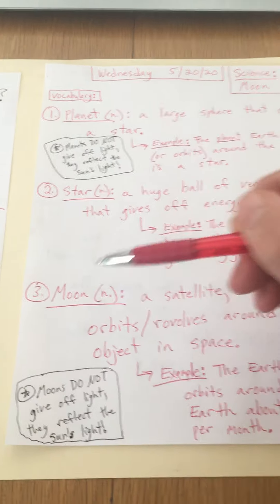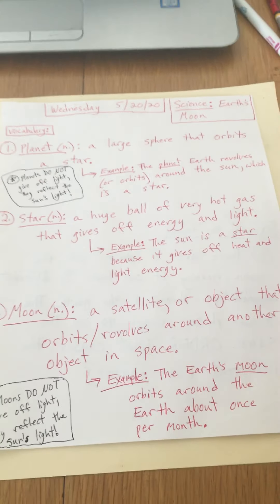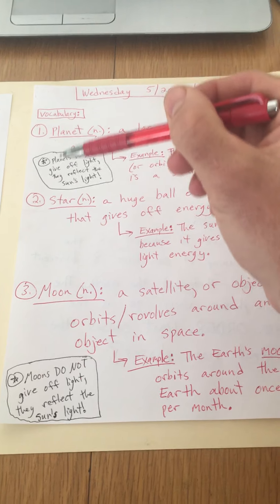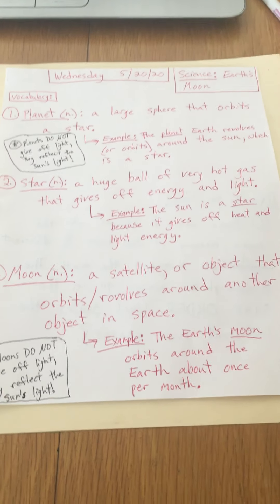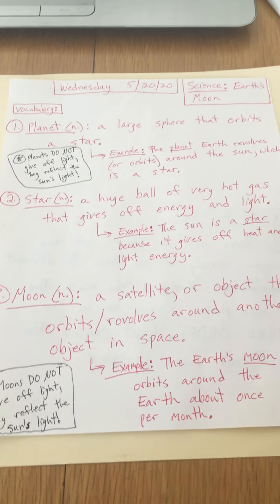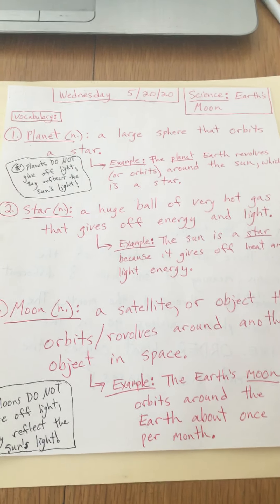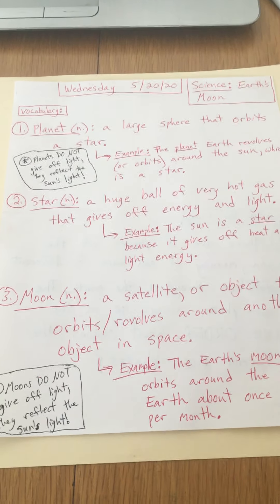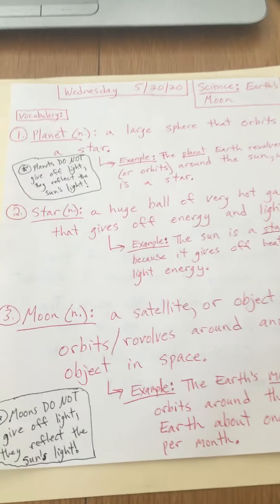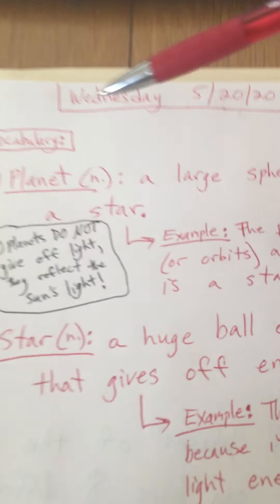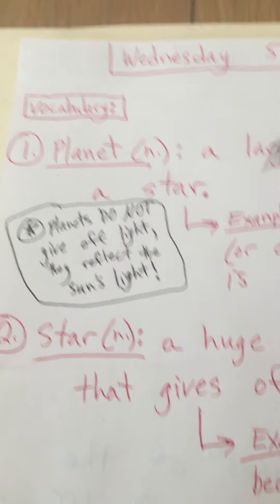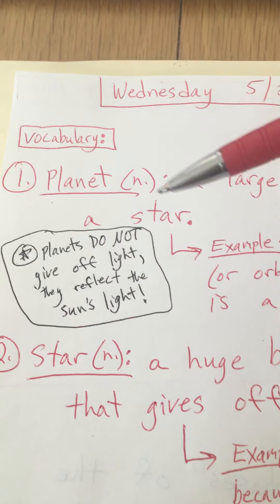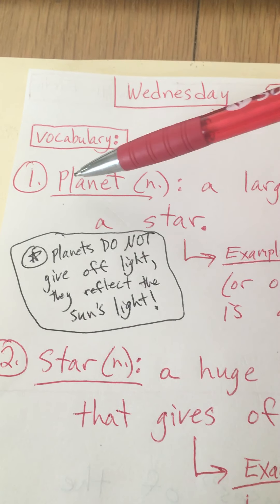We're going to go over some vocabulary first. You're going to need to know these words. You probably know what these things are, but you might not know the exact definition. So that's why we're going to go over what exactly these words mean. We'll start with planets. I bet every one of you knows what a planet is, but let's find the actual definition.